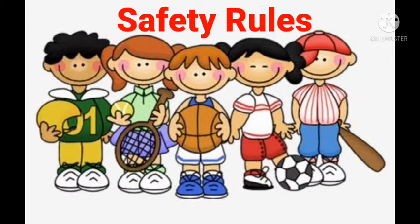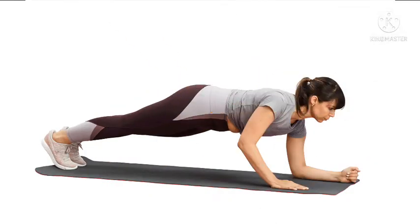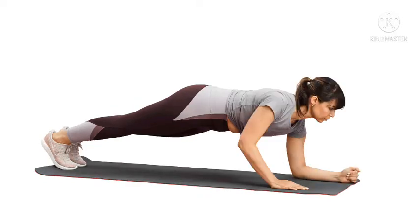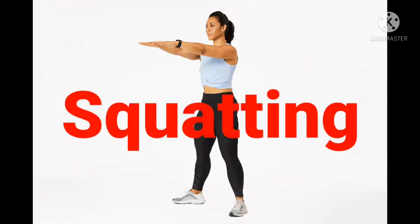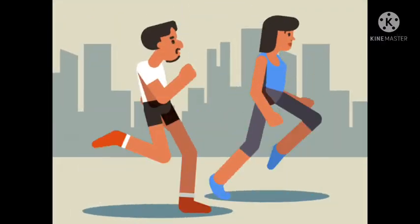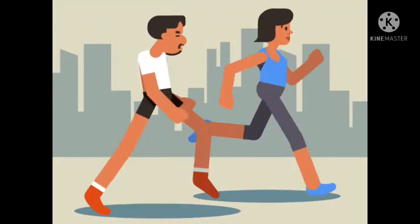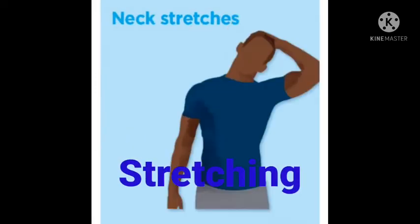Safety rules are simple rules that must be obeyed as we play games at school or at home. Rule number one: do enough warm-up or simple exercises to get you ready for the main game or sports. Examples of such exercises are squatting, jogging, and stretching.